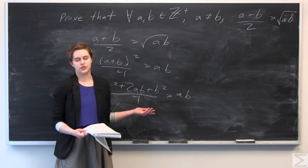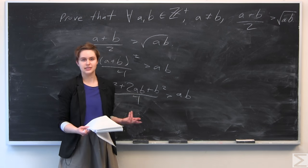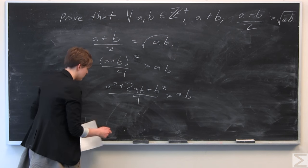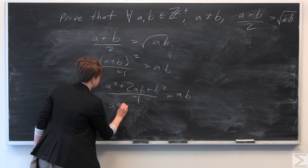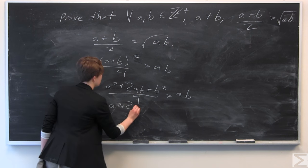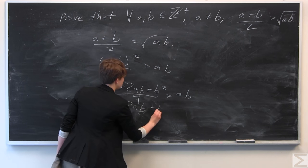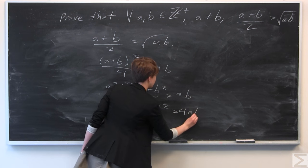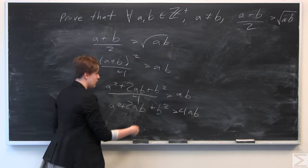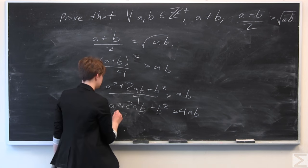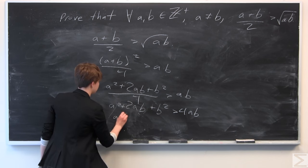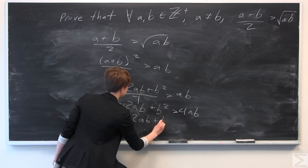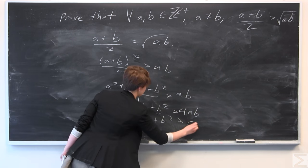Next, we multiply both sides by 4, giving us a squared plus 2ab plus b squared is greater than 4ab. Then we subtract 4ab from both sides, so we get a squared minus 2ab plus b squared is greater than 0.